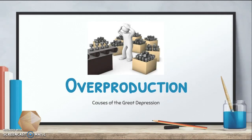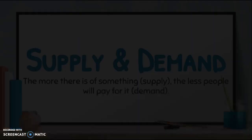Overproduction — production, making things quite literally. Too many things were made during the 1920s, which partially caused — and is perhaps the greatest cause of — the Great Depression.